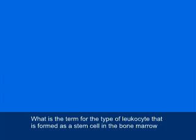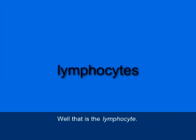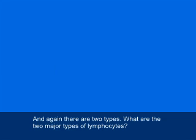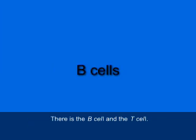What is the term for the type of leukocyte that is formed as a stem cell in the bone marrow but then differentiates into other parts of the body? That's the lymphocyte. And there are two types of lymphocytes — what are the two major types? There's the B-cell and the T-cell.